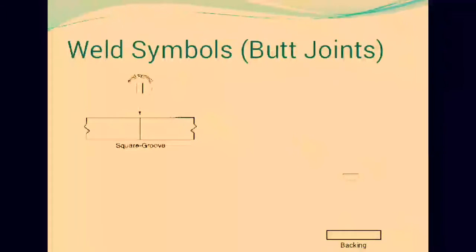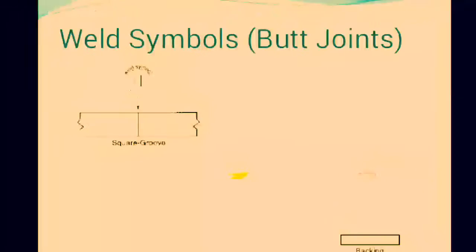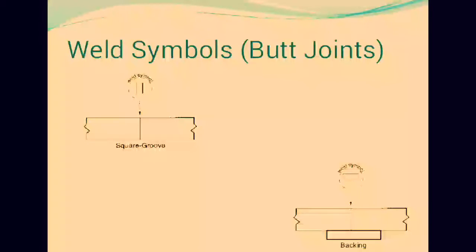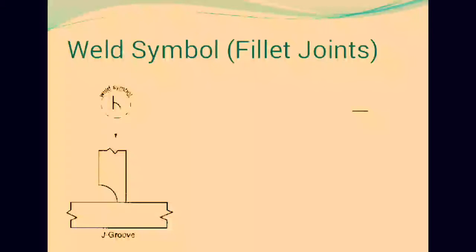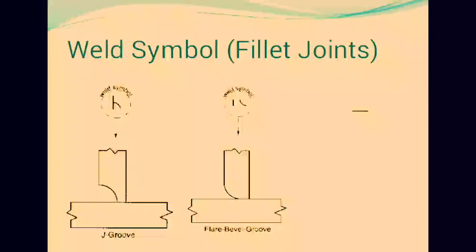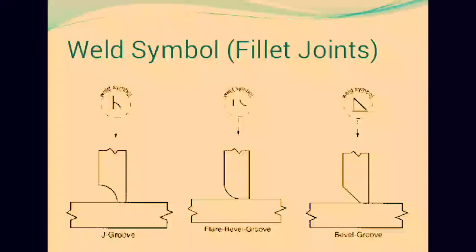In butt joints, there are symbols like square groove, backing groove, bevel groove, and weld symbols. For fillet joints, symbols include J-groove, hair bevel groove, and bevel groove — the difference being that one has a straight line and the other a curved shape, where we are removing a circle from the other material.